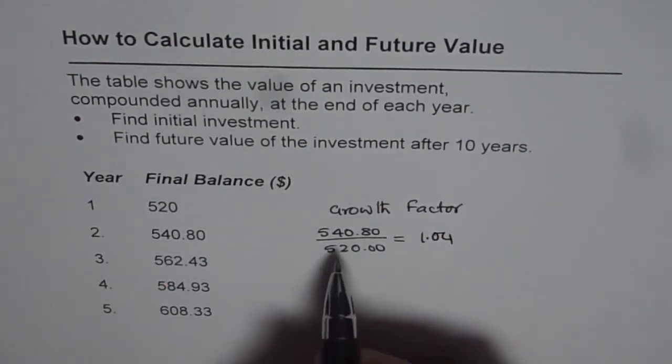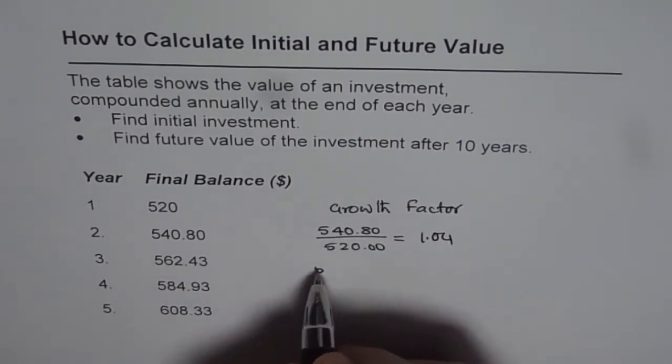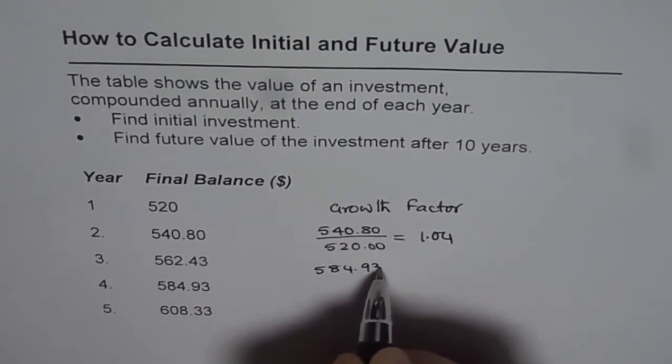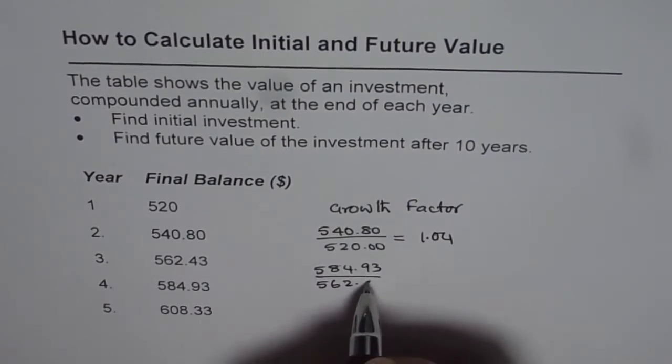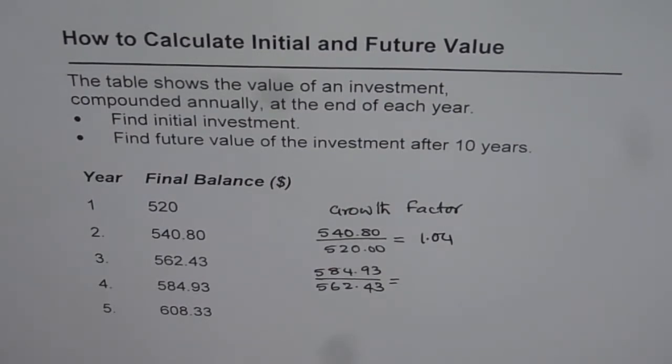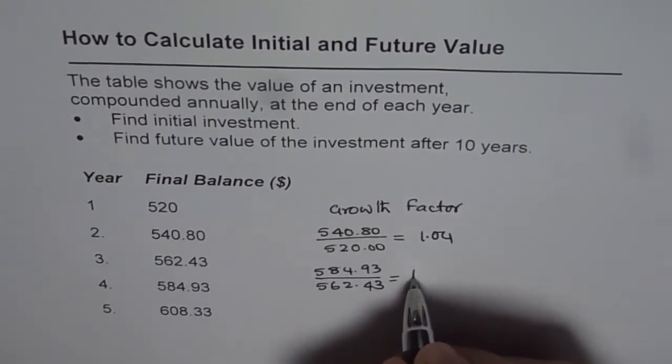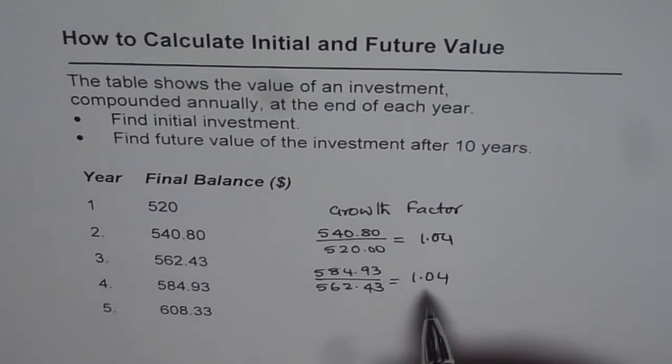So let's check if we are getting the same value for others. So this time we will do 584.93 divided by its previous value which is 562.43. This is 584.93 divided by 562.43. It is equal to 1.04. So the same. So the growth factor is 1.04. From growth factor you can also find annual compound interest rate which is 4%.